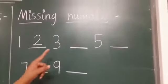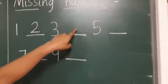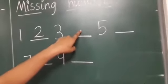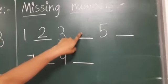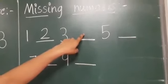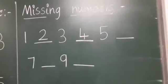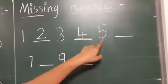Next. Between three and five, one number is missing. Isn't it? Isn't it children? Yes. Which number is that? Yes. Very good. The number four. Number five.